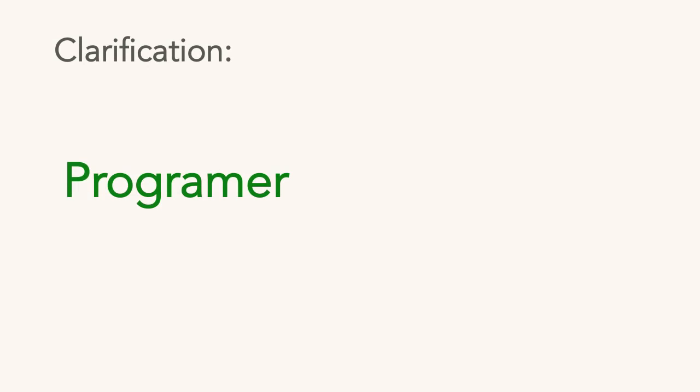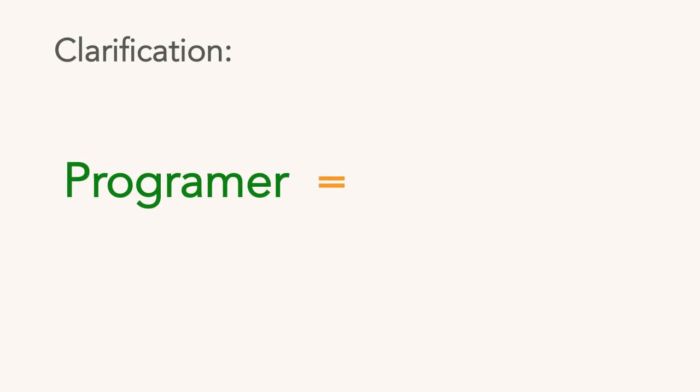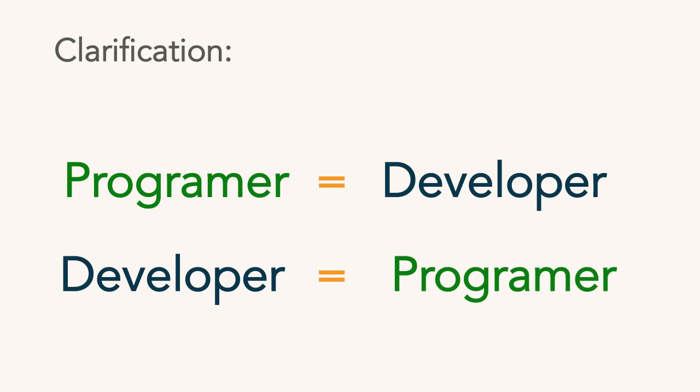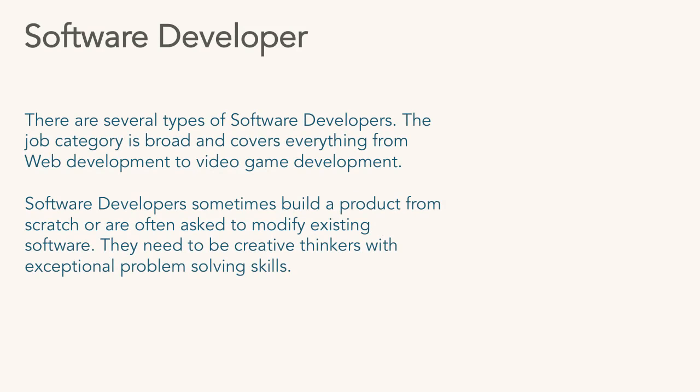A quick clarification: programmer and developer are used interchangeably — a developer is a programmer, a programmer is a developer. Now, there are several types of software developers, and this is a broad category covering everything from web development to video game development. They all fundamentally use a software development language and set of tools to write a program or create code with a specific purpose in mind.